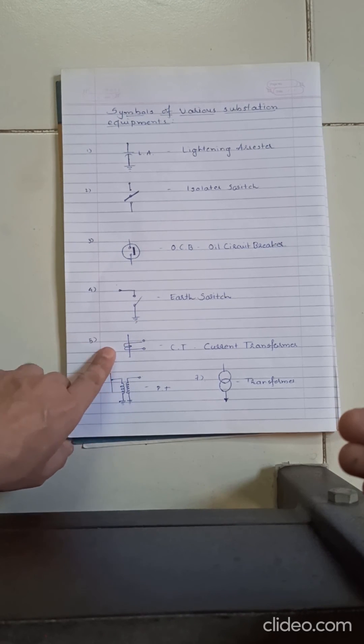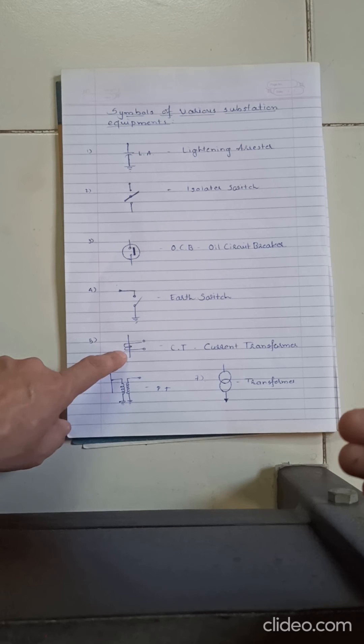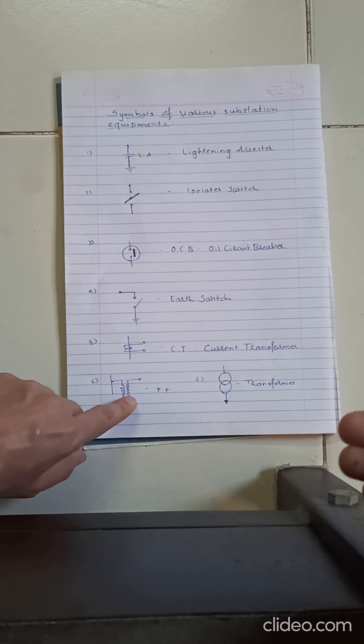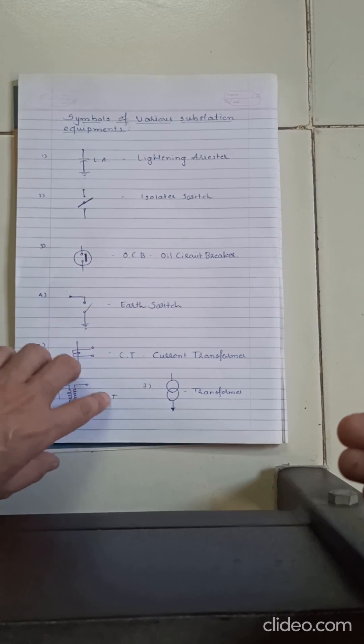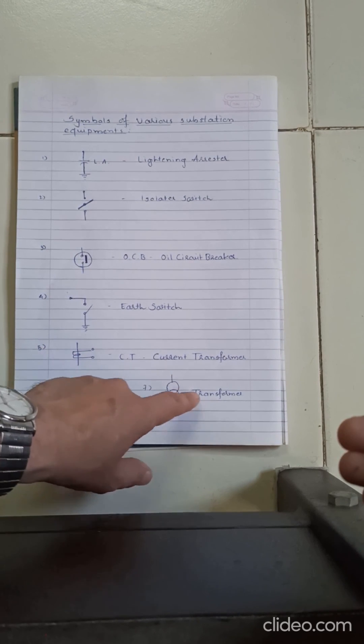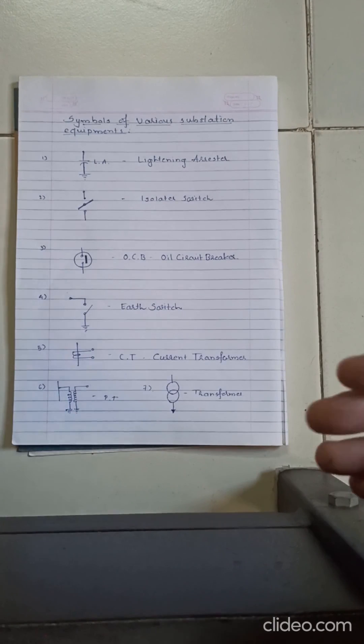Fifth symbol is of CT, CT is current transformer, you already know that. Sixth symbol is of PT, that is potential transformer. And seventh symbol, two circles overlapping with each other, is the symbol of transformer.